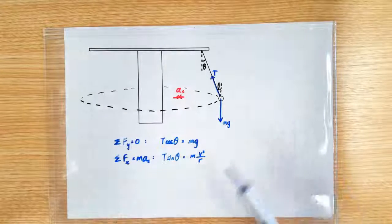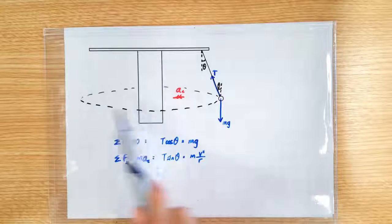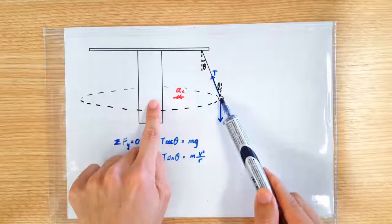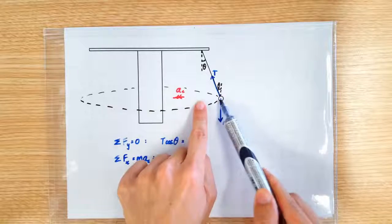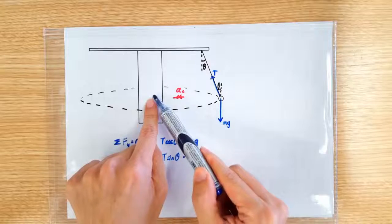So everything looks identical to the conical pendulum except that the radius of the circular motion is this length here. It's not this length. So the r here is actually this distance, from here all the way to here.